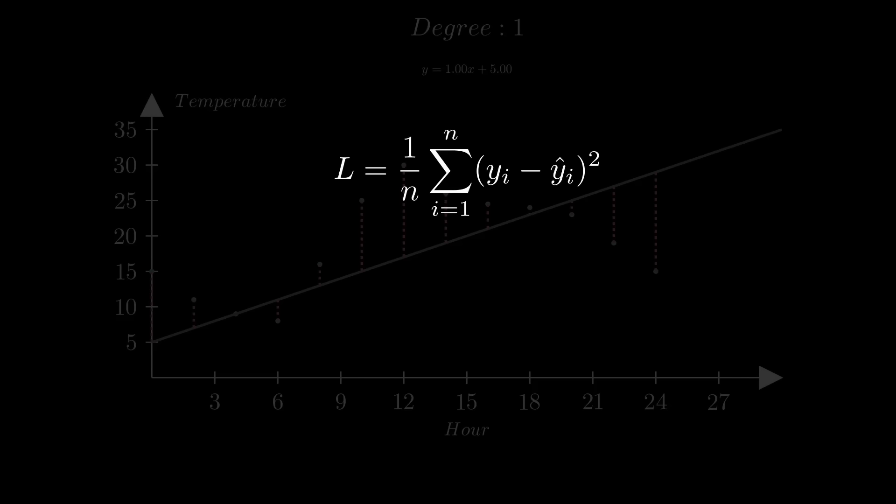In essence, we are trying to minimize the loss value L. On a technical note, the Bayesian predictor is the conditional expectation of the average temperature given the time of day if we use a sum of squared error loss function.